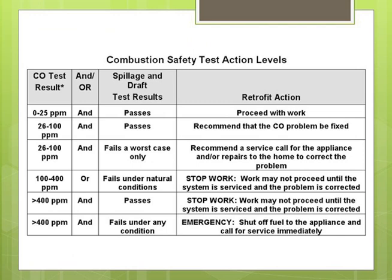These are the action levels. If you measure carbon monoxide between 0 and 25 parts per million and your flues are working properly, you proceed with the work. You have to take more and more stringent measures depending on how concentrated the carbon monoxide is. If you turn on almost any gas oven and take a carbon monoxide reading right away, it will be in the 600 range — really dangerous. But as it warms up and works for a few minutes, it will go down to hopefully below 25, somewhere around there, if everything's working properly.